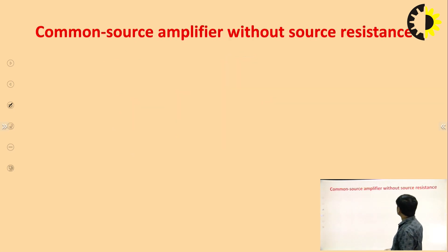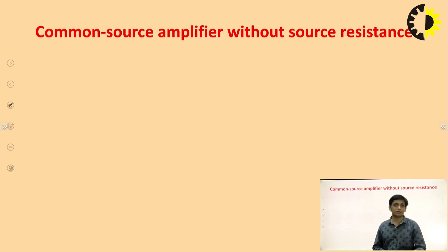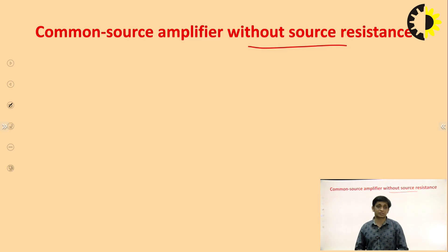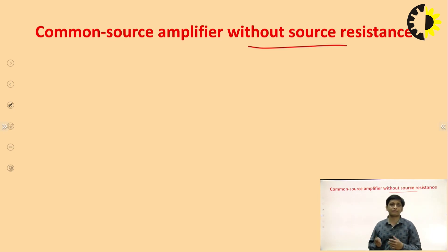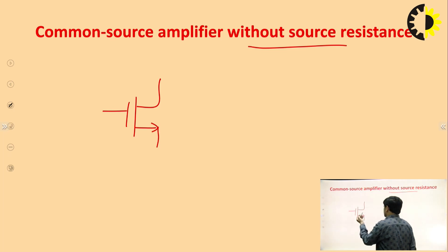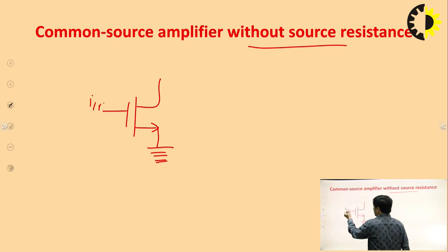Coming to the main topic: the common source amplifier without source resistance. In the common source amplifier, the input signal is applied at the gate terminal and the output is taken from the drain terminal. There are two cases: one is common source amplifier without source resistance — meaning no resistance is connected at the source terminal — and the other is common source amplifier with source resistance. In this class, I am focusing on the common source amplifier without source resistance, where the source terminal is simply grounded.